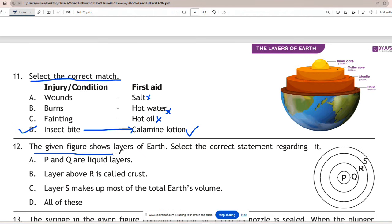Question 12: The given figure shows layers of earth. Select the correct match. As layer above R is called crust. S is the topmost layer which is above layer R, it is called crust layer. All other options are incorrect.